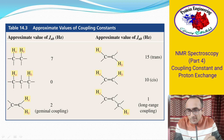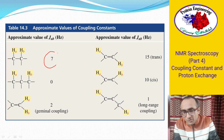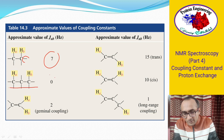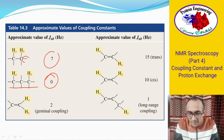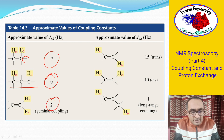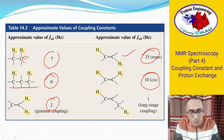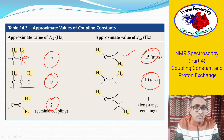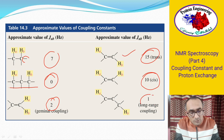Looking at some typical compounds: if the coupling is more than three sigma bonds apart, the J value would be 0. In geminal coupling the value of J is 2 Hz. In trans coupling J is 15 Hz, and in cis coupling J is 10 Hz. For long-range coupling where one of the bonds is a double or triple bond and the protons are more than three sigma bonds away, J is about 1 Hz.